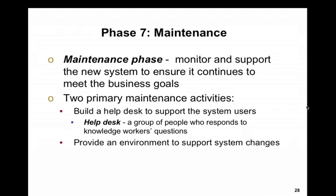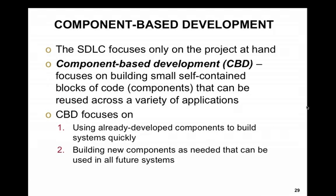Maintenance — last but not least. A lot of IT people work in maintenance, monitoring and supporting the new system to ensure it continues to meet business goals. Two primary activities: building a help desk to support system users, where a group of people respond to knowledge worker questions; and providing an environment to support system changes — a change control system, bug reporting, and corrections. We also have component-based development — building small, self-contained blocks of code or components that can be reused across a variety of different applications.